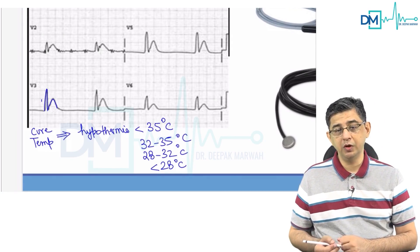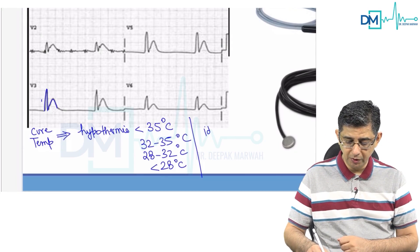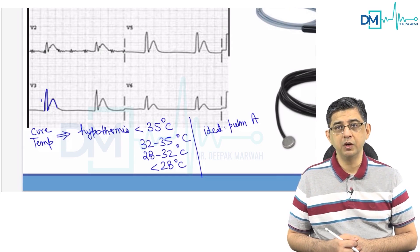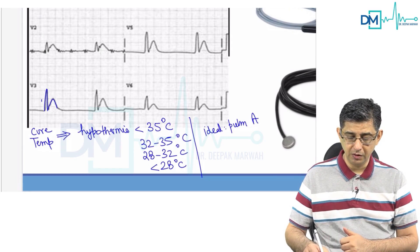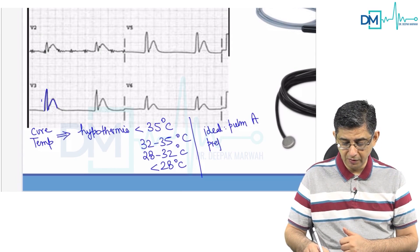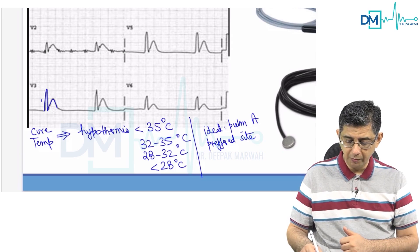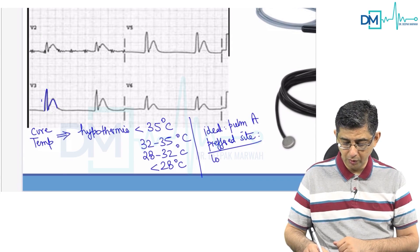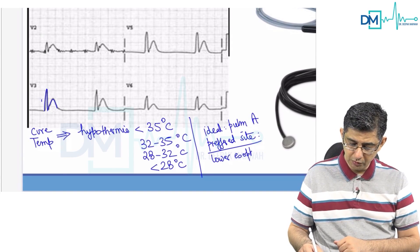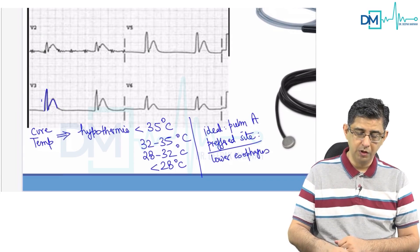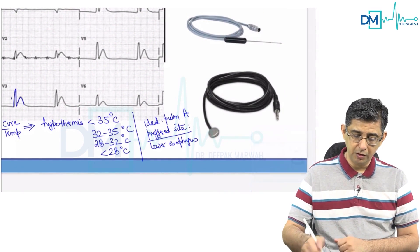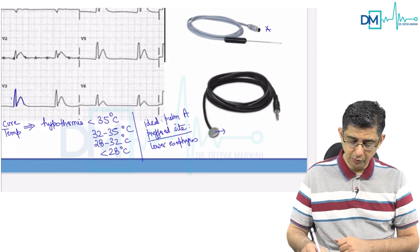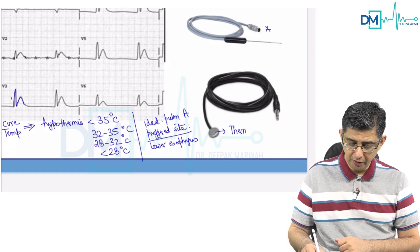To check hypothermia, you would ideally place the thermometer in the pulmonary artery — that is the ideal site for checking core temperature. However, if a multiple choice question asks for the preferred site, the answer is the lower part of the esophagus. An esophageal probe can be used to record temperature, and the probe shown here is the type seen in an overhead radiant warmer.